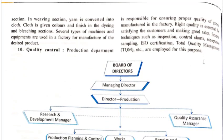The last function is quality control. The production department is responsible for ensuring proper quality of goods manufactured in the factory. Right quality is essential for satisfying the customer and making good sales. Several techniques such as inspection, control charts, accurate sampling, ISO certification, and total quality management (TQM) are employed for this purpose.